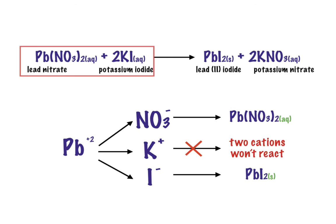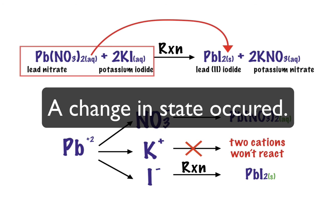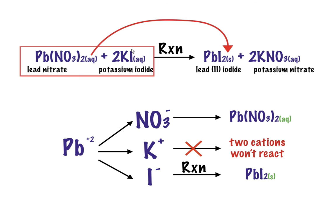Look at what happens with lead on the reaction side — it goes from being aqueous into a solid. And the same thing happens with our iodide: iodine is in an aqueous state, but then when mixed, it becomes a solid. So there's a reaction between lead and iodine to form lead(II) iodide, and this is a solid. Anytime you see in a chemical reaction a change of state — like aqueous changing to solid — you know that a reaction has occurred. When you have an insoluble combination like lead and iodine, this creates an insoluble compound, which makes it a solid, or as we call it, a precipitate — one that does not dissolve in the liquid.